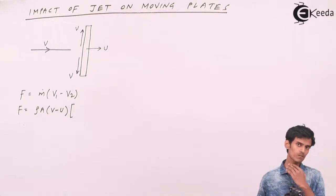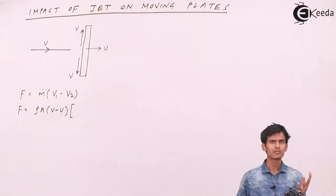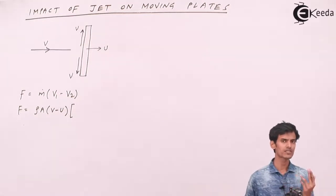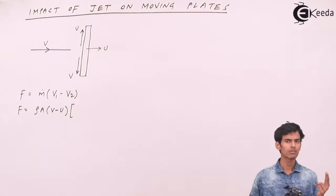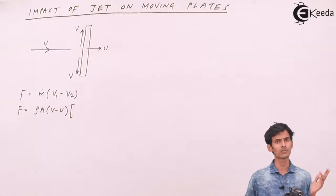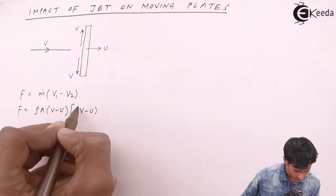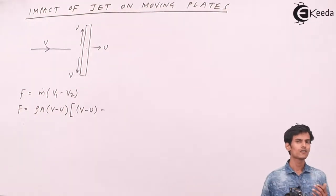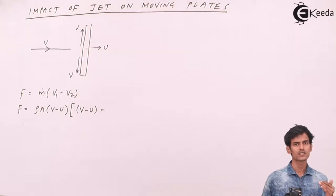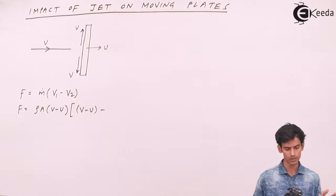V1 is the velocity of the jet before striking the plate and V2 is the velocity after striking the plate. V1 will again be V minus U, that is the relative velocity before striking the plate. V2 is the velocity after striking the plate, which is normal to the plate. Since there is no component of velocity normal to the plate after impact, V2 is 0.